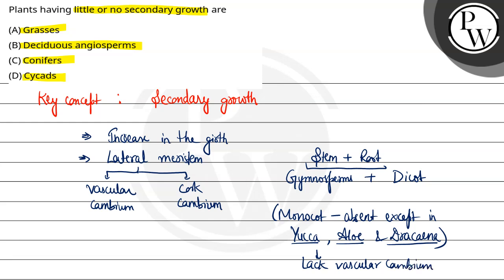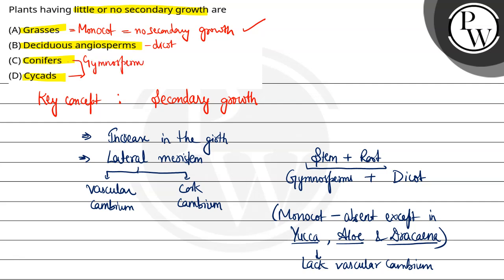So ab question hai — plants having little or no secondary growth. First option hai grasses, so grasses kya hai — monocots hai, aur in me secondary growth absent hoti hai, no secondary growth. So the final answer is option A, grasses. Hope you understood it well, best of luck.